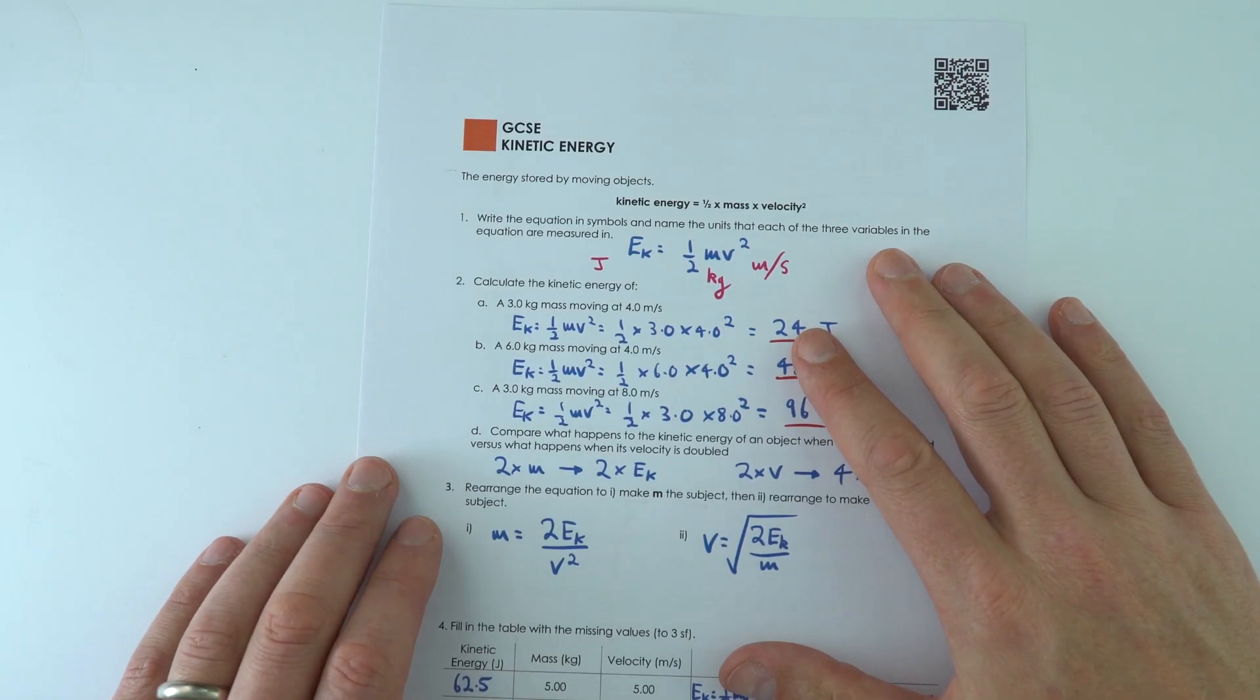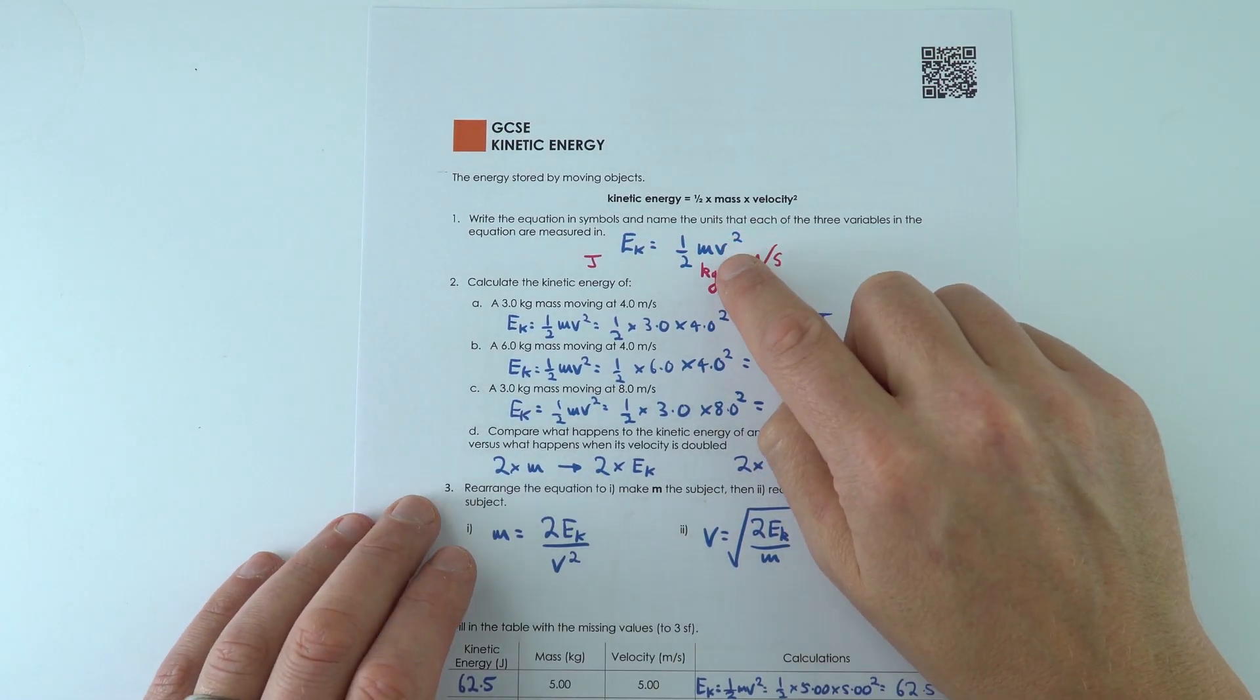So some tricky questions here, but if you can do this, you can do anything at GCSE. These questions about kinetic energy do get a bit tricky because we have a v squared in the actual equation.